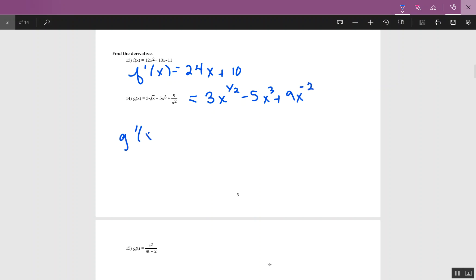Now I'm ready to take the derivative, again using the power rule. So the half comes down, I have 3 halves. I have x to the negative 1 half. 3 times negative 5 is negative 15, x will be squared. The negative 2 comes down, I have negative 18. When I subtract 1, I get negative 3.